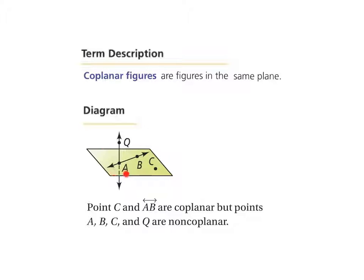So, looking at this, we can see that point C and line AB are then coplanar figures. Because they are in the same plane. But, all the points A, B, C, and Q are non-coplanar. Because point Q is not in the same plane.